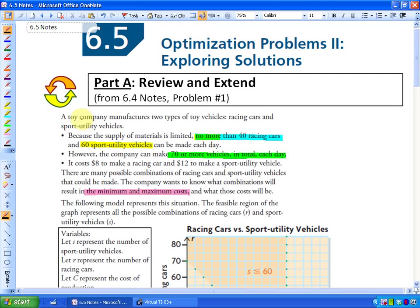But the question says this: a toy company manufactures two types of toy vehicles, racing cars and sport utility vehicles. Because the supply of materials is limited, they can make no more than 40 racing cars in a day and no more than 60 sport utility vehicles in a day can be made. However, they can make 70 or more vehicles in total each day.